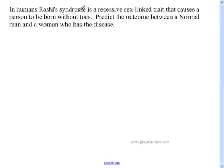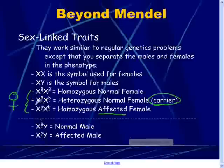Let's look at one more problem. In humans, Rashi syndrome is a sex-linked recessive trait that causes a person to be born without toes. Yeah, I made this disease up, it's not real. Predict the outcome between a normal man, that would be X capital B Y, and a woman who has this disease. In order for a female to have the disease, it's got to be lowercase lowercase b. One of the reasons why sex-linked traits are more common in males than females is that females have two-thirds chance of being normal, whereas males have a 50-50 chance of being normal.